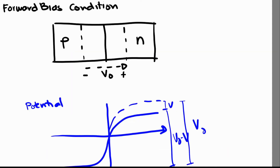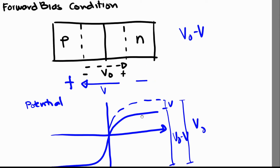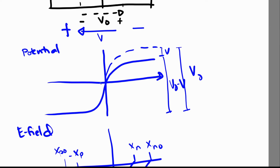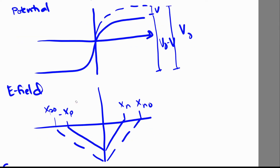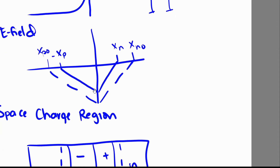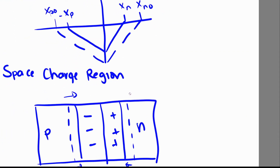When we are in the forward bias condition, what happens is that our applied potential is positive. By that we mean we apply positive potential to the P-type and negative to the N-type. So the potential difference across this junction will then be V₀ minus V. This reduces the potential barrier across our junction. Due to this decrease in the potential barrier, the electric field will also decrease.